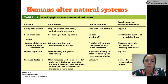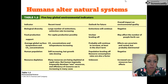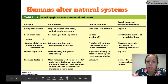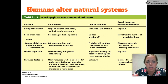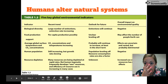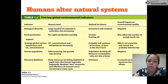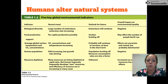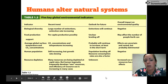These are your five key global environmental indicators that we'll talk about a lot throughout the school year: biological diversity, food production, average global surface temperature and CO2 concentrations, human population — which is going up — and resource depletion. You should know the recent trend for each of these, what it looks like in the future, and the overall impact on environmental quality. You might see something like this on a quiz or test.